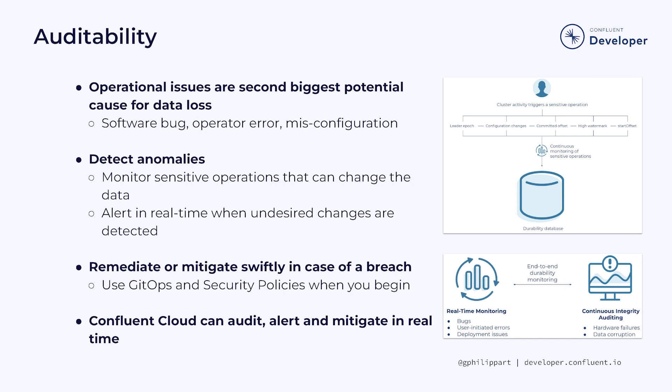In case you didn't know, after hardware and infrastructure issues, operational issues are the biggest potential cause for data loss. Software bugs, operator errors and misconfiguration can happen and wreak havoc. The key to prevention is to proactively detect anomalies. It is strongly recommended to monitor sensitive operations which can change the data — for example, changing the replication factor for topics.